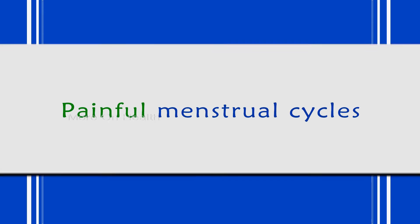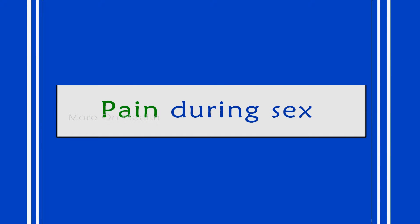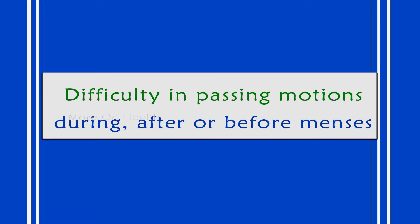So what do we do? Typically, a woman suffering from endometriosis would always complain of painful menstrual cycles, pain during sex, and difficulty in passing motions during menses or before and after menses. These are classical symptoms — they may or may not be present, but they are mostly present in our women.